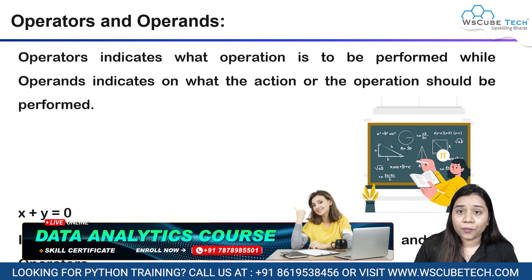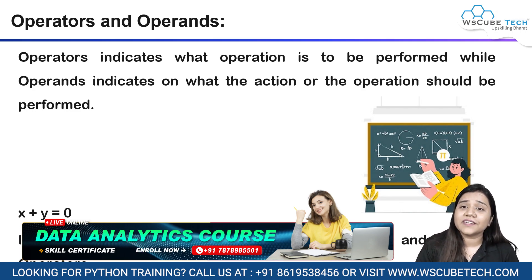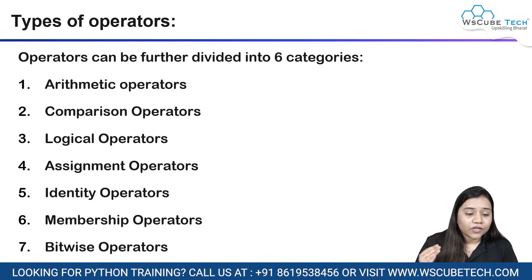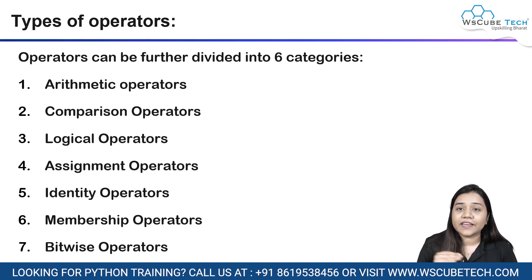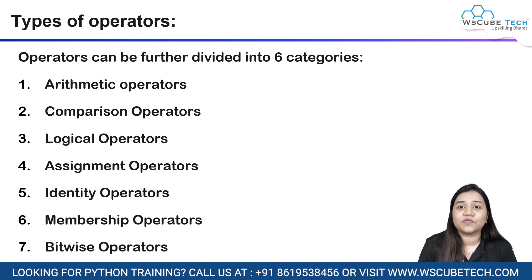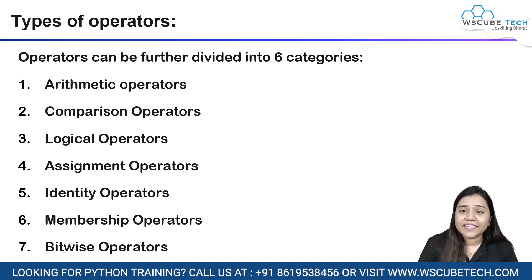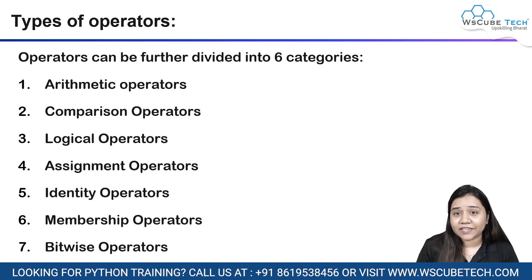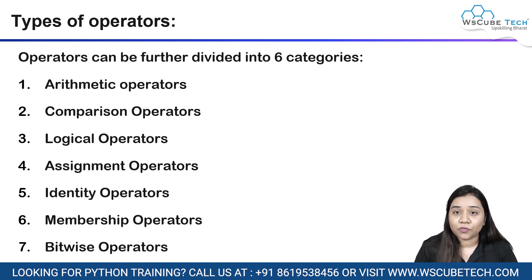This was about operators and operands. Operators are further categorized into seven categories: arithmetic operators, comparison operators, logical operators, assignment operators, identity operators, membership operators, and bitwise operators. These are the seven types of operators we will be learning throughout this module.